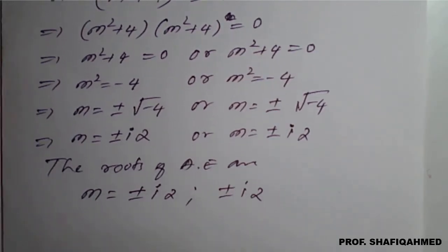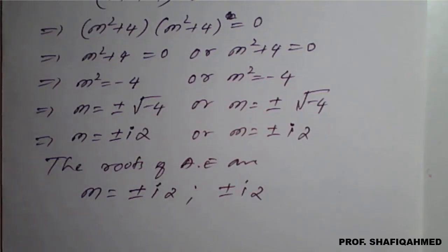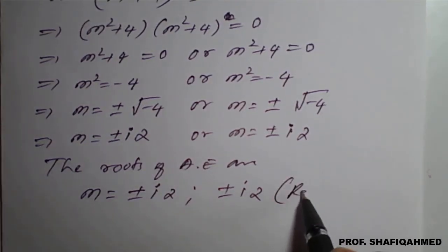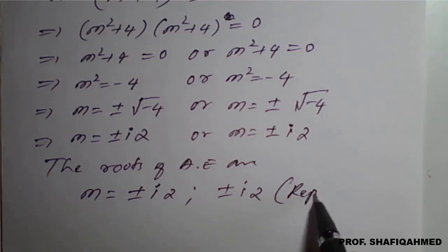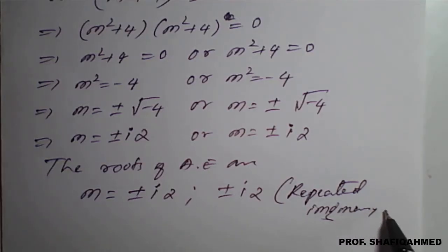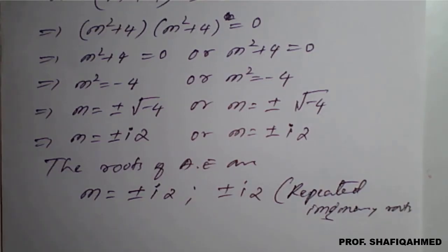Here we got a complex root that is repeated — we got a repeated imaginary root.